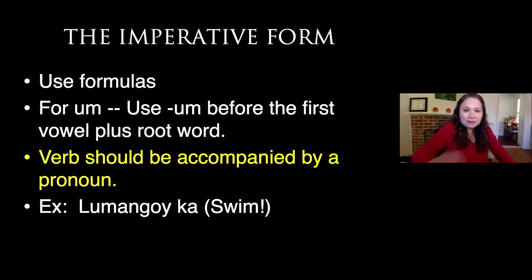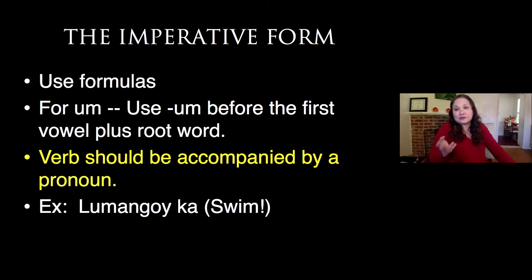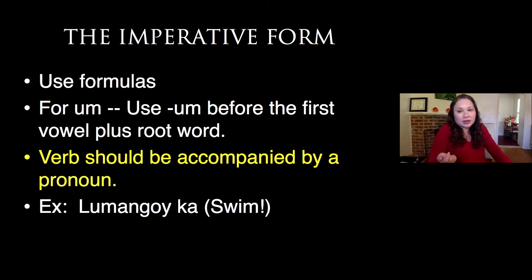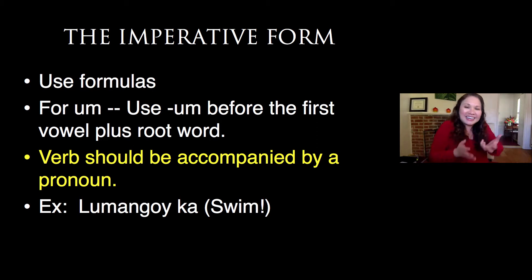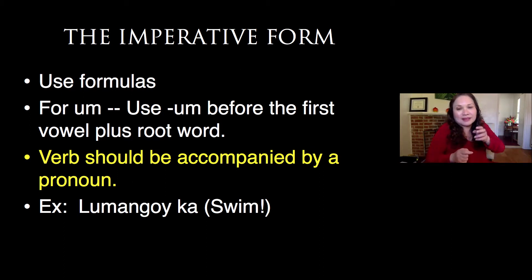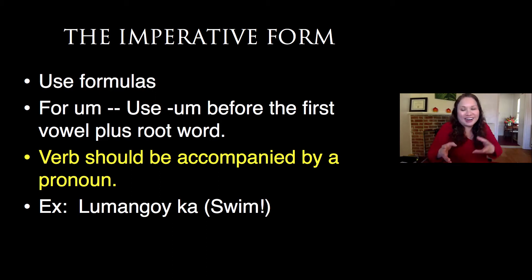Now let's look at the imperative form. For um, you use um before the first vowel plus the root word. The verb should always be accompanied by a pronoun. For example, lumangoy ka means swim. Don't just say lumangoy — unlike English where you just say swim, in Filipino you need the pronoun. So lumangoy ka literally means swim, you.